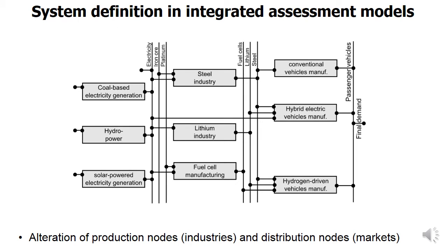We continued to investigate system structure beyond industrial ecology and found that in integrated assessment models, bipartite graphs have been used for decades. This is shown in the example of the Markel model, where gray boxes represent conversion processes like energy conversion or energy use, and vertical lines represent distribution nodes that distribute commodities like electricity to different consumers.